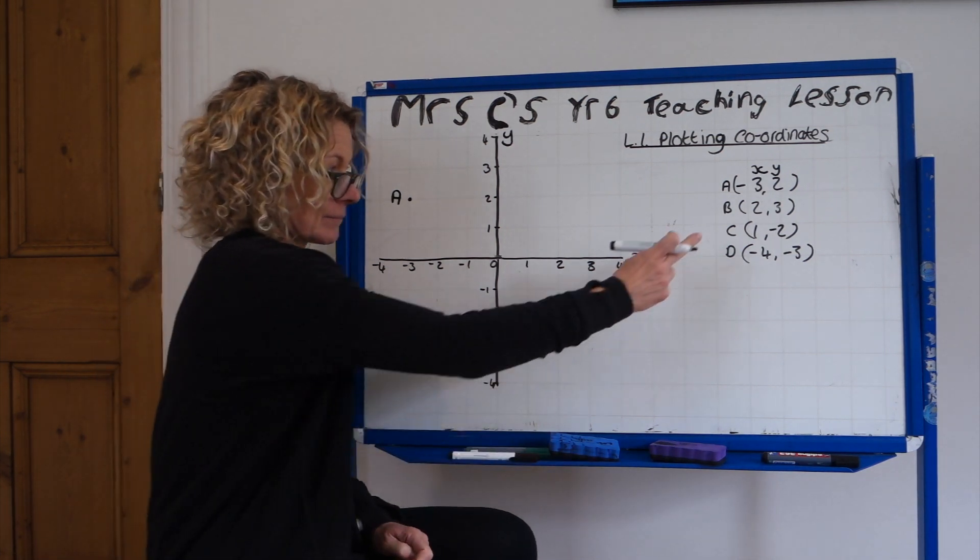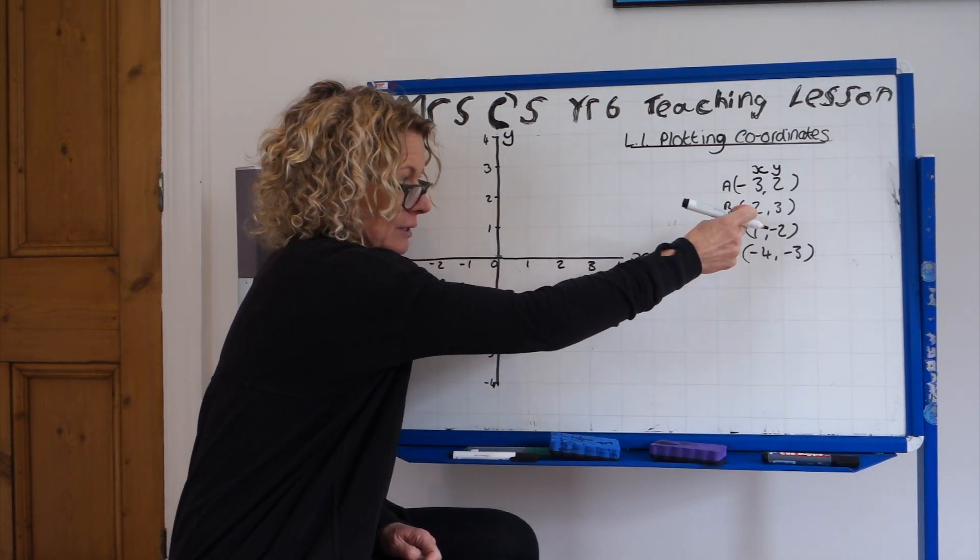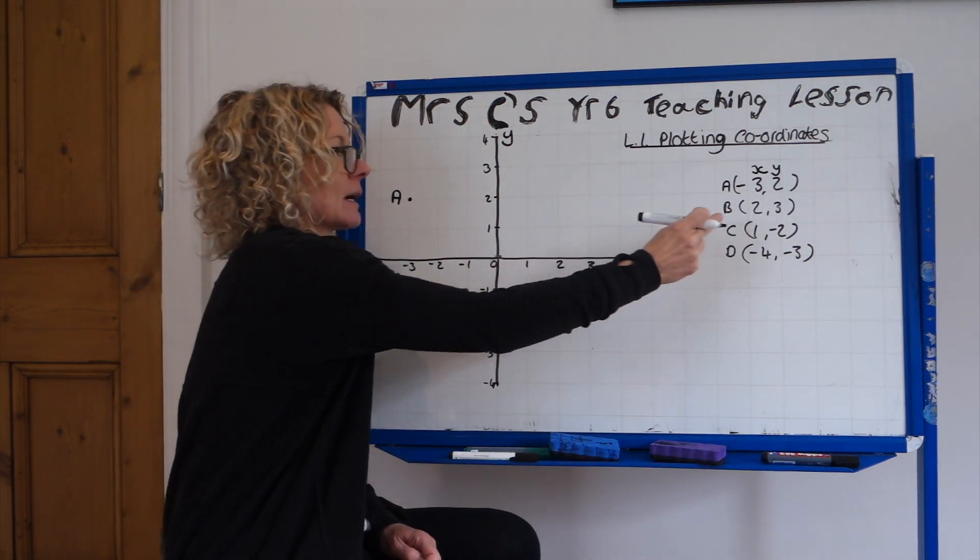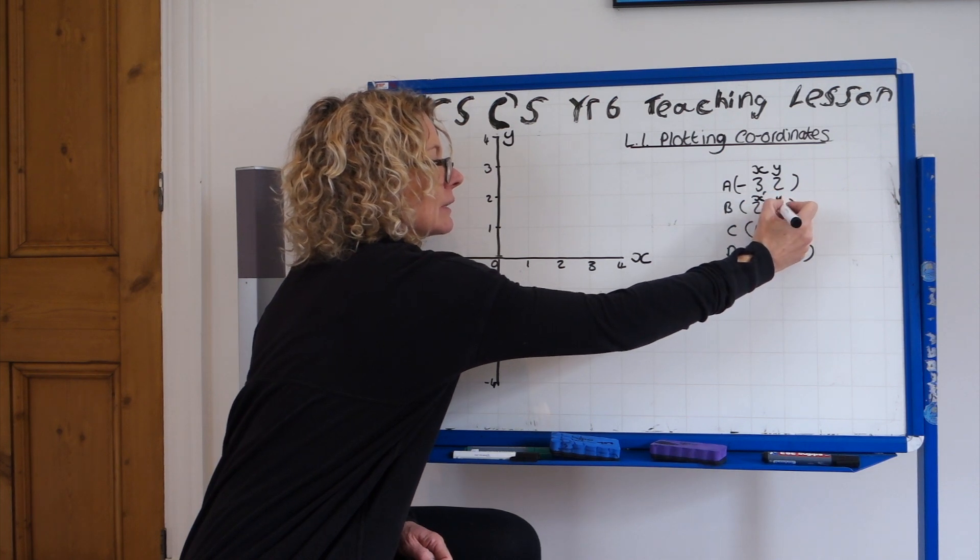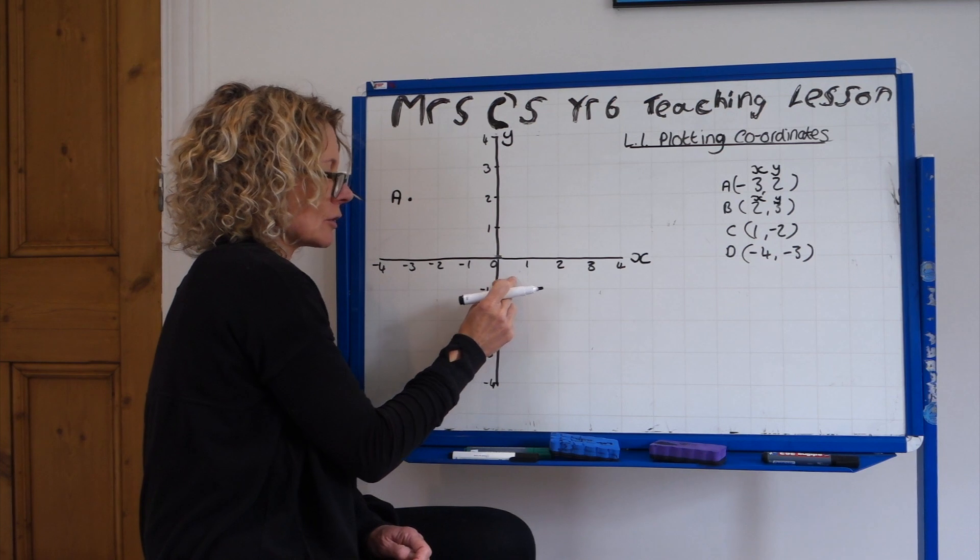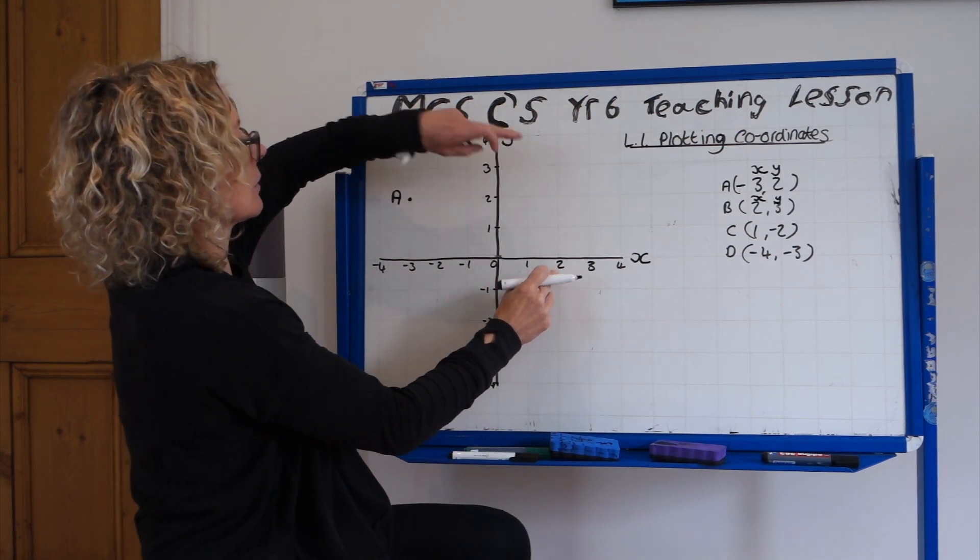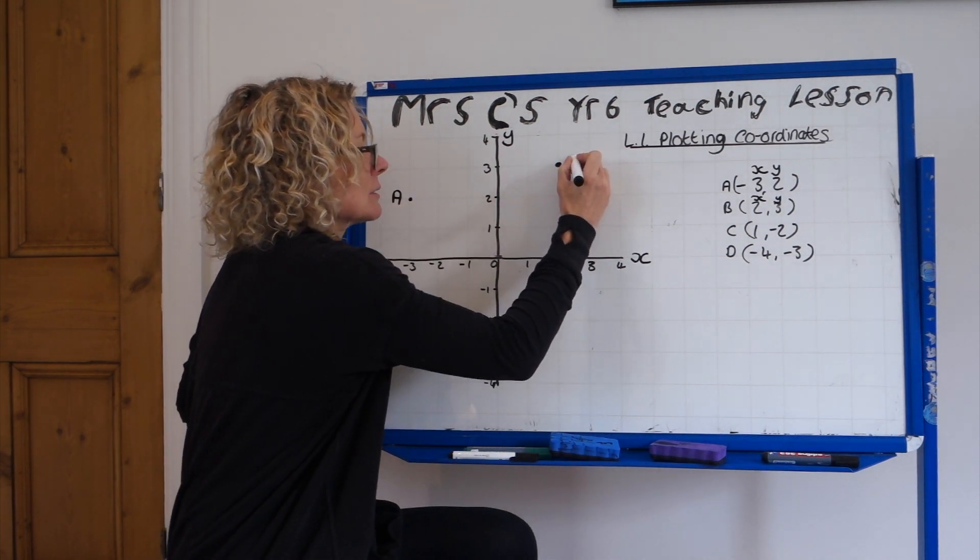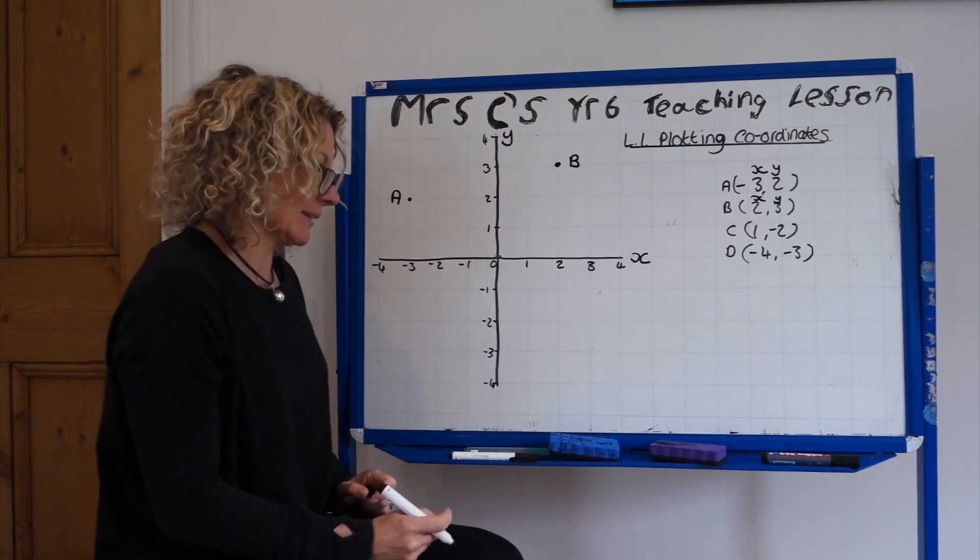Right, B. What comes first? x-coordinate in through the hallway, through the hallway and then up the stairs. So 2 is your x and 3 is your y. So we are at plus 2 on the x and then 3 on the y. So that is where B goes. Are you doing it? Hopefully.